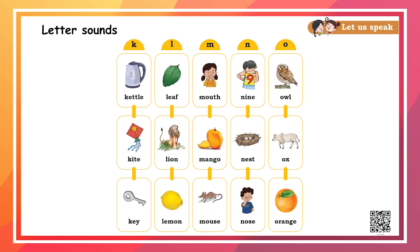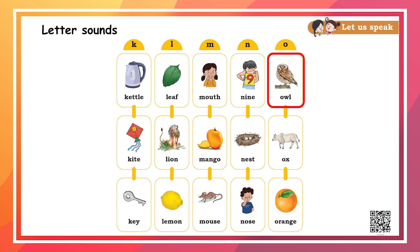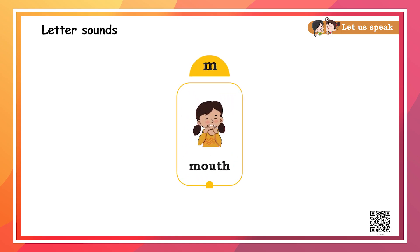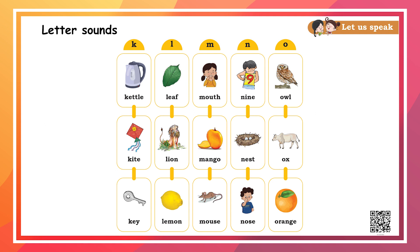Here we get some more pictures, but I see their names are complete. We see a kettle, leaf, mouth and many other pictures. Children, can you repeat their names and catch the first sound that you hear in that word? For example, 'mouth' — I hear 'ma' in the beginning. So identify all the beginning sounds in these given words.